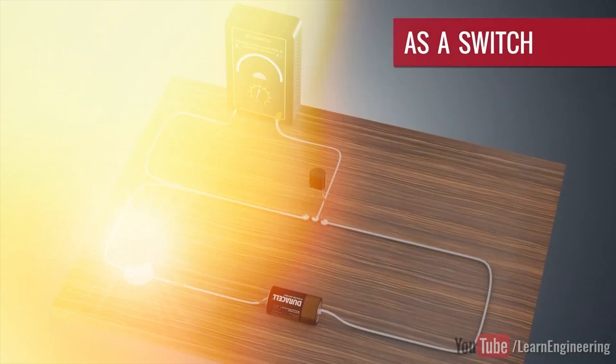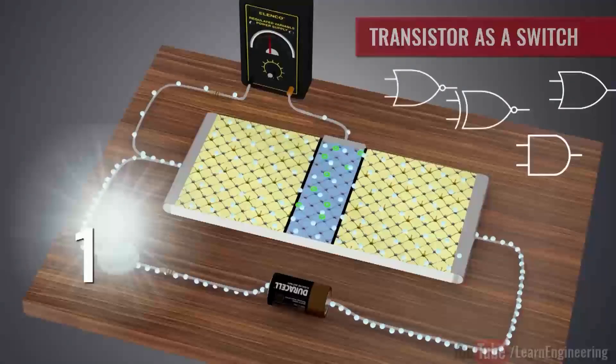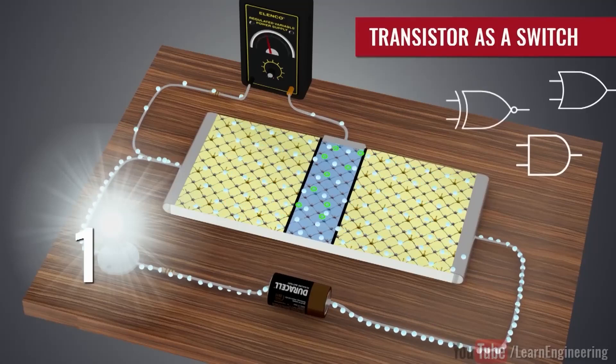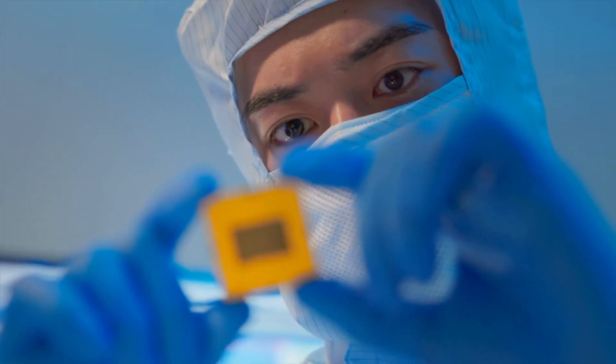Transistors can also act as switches, with a small electric current passing through a section of the transistor, enabling the flow of a much larger current through another section. Or in simpler terms, the small current activates the larger one. This is basically how all computer chips operate.